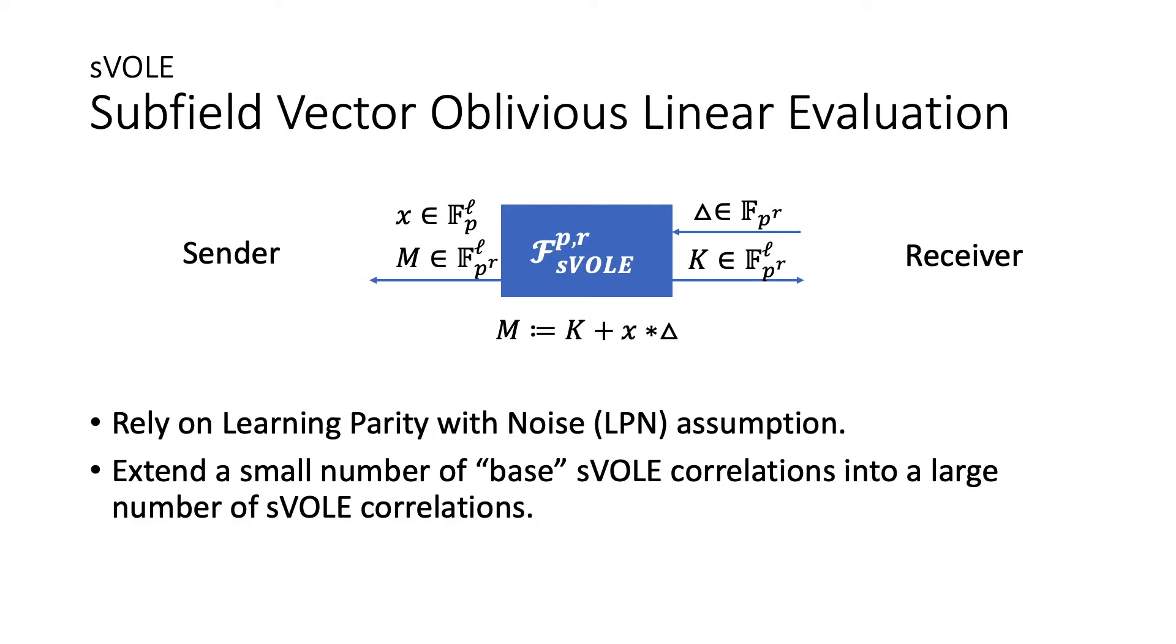An important building block of our protocol is the subfield vector oblivious linear evaluation or sVOLE. The basic functionality of the sVOLE is like this. The receiver has a global key delta, and the functionality inputs the delta and randomly sampled two vectors x and k, and computes the vector m equals k plus x multiplied with delta. It outputs x and m to the sender and k to the receiver, so sender and receiver each receive a vector that are correlated. The sVOLE relies on the Learning Parity with Noise assumption, and it basically extends a small number of base sVOLE correlations into a large number of sVOLE correlations with the help of LPN.